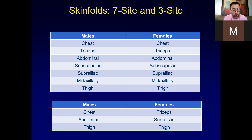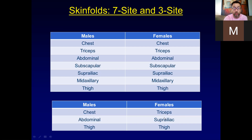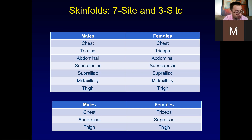We plug the measurements into the Jackson-Pollock equation to calculate body density, with different equations for men and women that also account for age. For the three-site measurement, men use chest, abdominal, and thigh, while women use triceps, suprailiac, and thigh. These sites are selected because men and women tend to store fat somewhat differently in those locations.